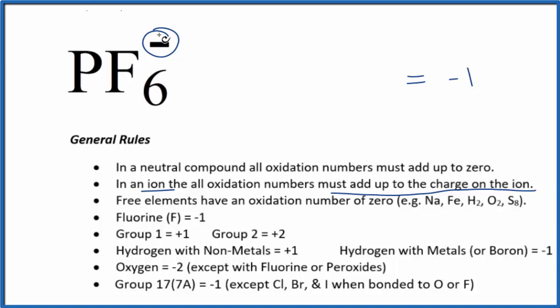So when we look at PF6 minus, we know fluorine has a minus one oxidation number. So each fluorine here, each one of these, has a negative one oxidation number. And we really don't know the phosphorus here looking at our rules. So we could set a little equation up.